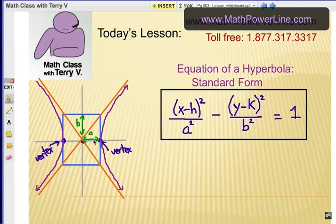In other words, it's A distance from here to here, and A distance from there to there, from the center out. That tells you the distance between the vertexes. And then this part here, as we sort of sketch out this rectangle, that helps us determine the asymptotes.